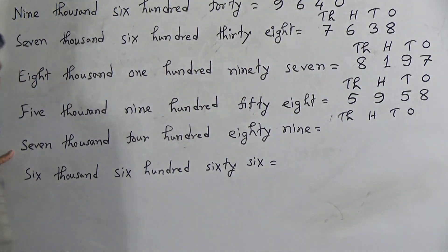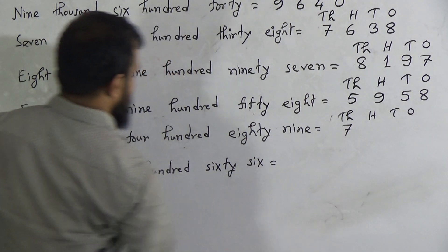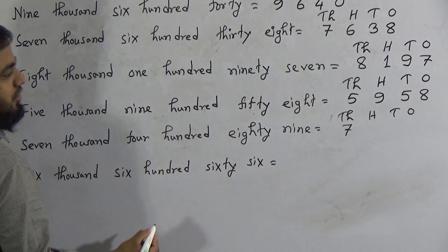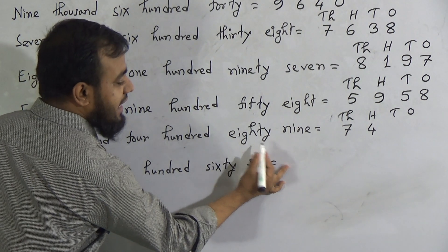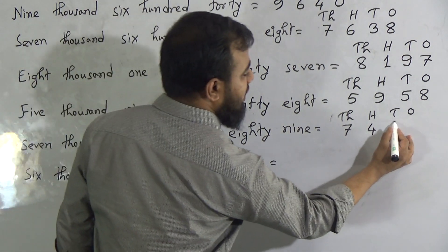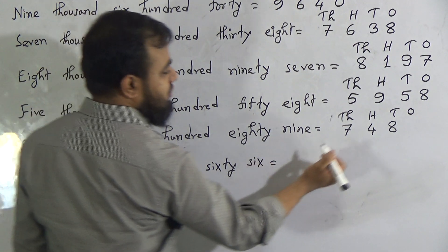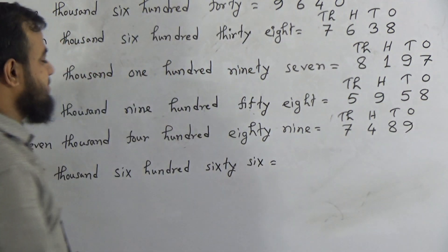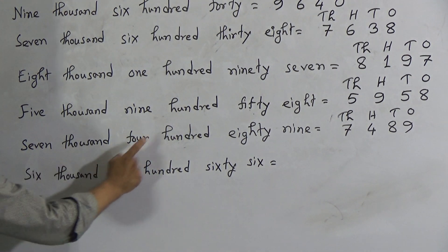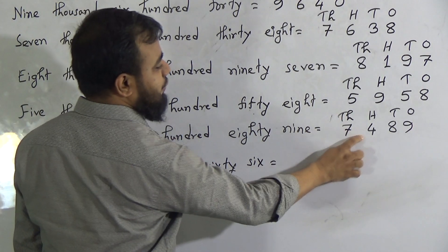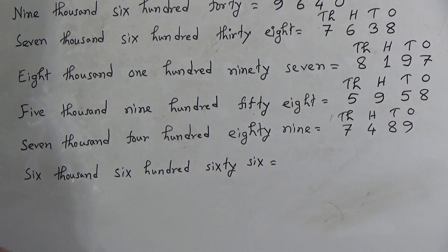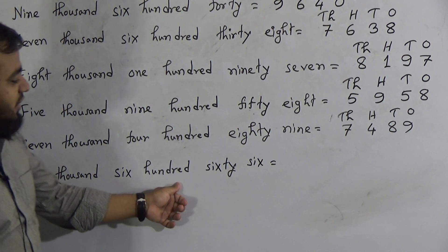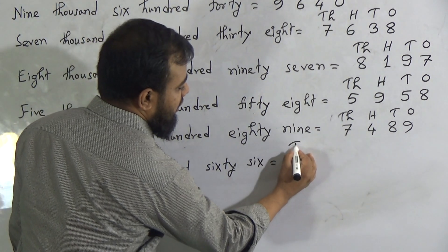The next number is 7489. Place value table: Thousands, Hundreds, Tens, Ones. Seven thousand means we write 7 in the thousands place. Four hundred means we write 4 in the hundreds place. For 89, we write 8 in the tens place (for 80) and 9 in the ones place. So 7489 is written as 7 | 4 | 8 | 9.